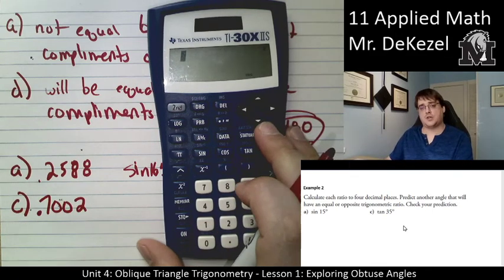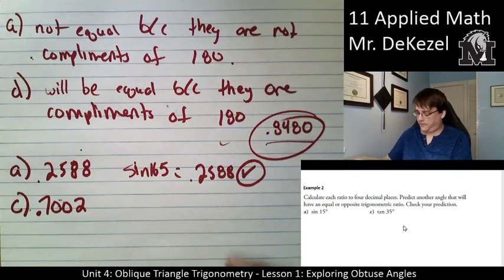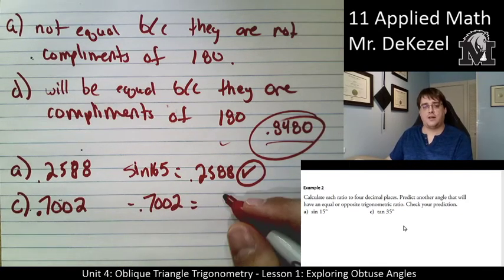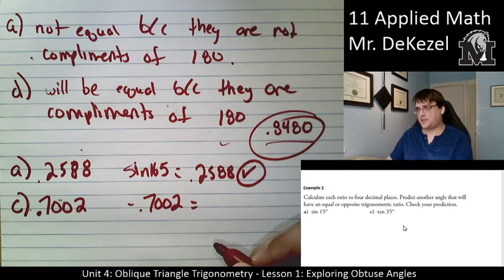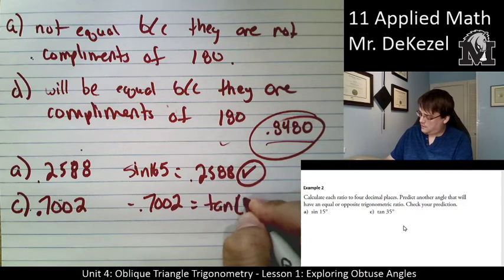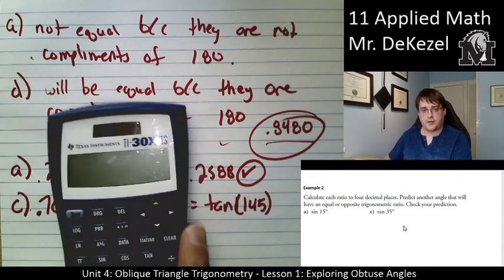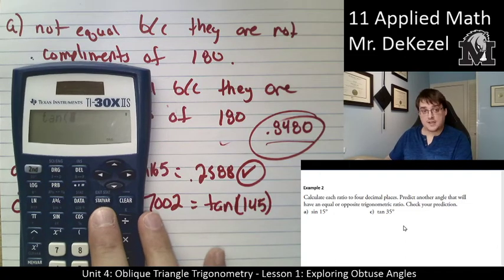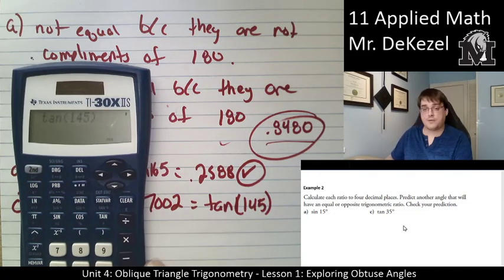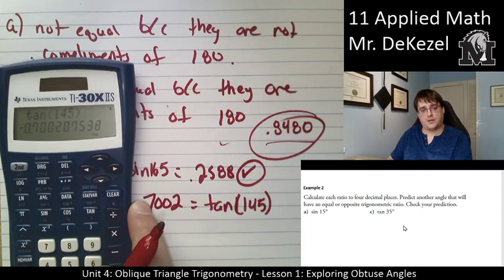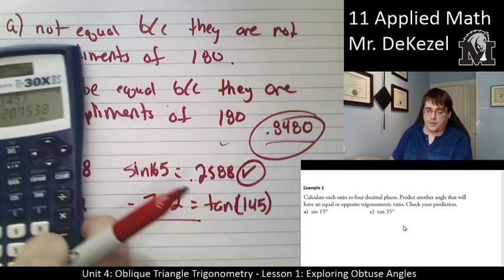Tan. So I would think that its negative, negative .7002 would be the tan of its complement. And its complement would be 145. So let's check that out. I already wrote it down, so I hope I'm correct. We have tan of 145, close my bracket, equals negative .7002, which is what I wrote here. So we did it.